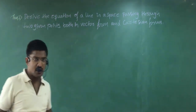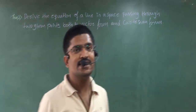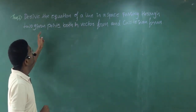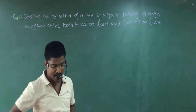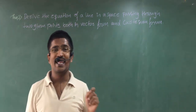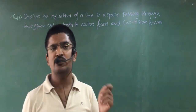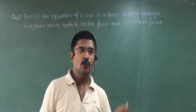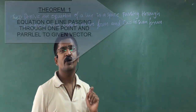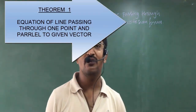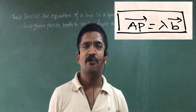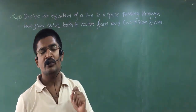For Theorem 2, what we have to derive? They are asking us to derive the equation of a line passing through two given points, both in vector form and Cartesian form. So Theorem 1 was a line passing through one point, and Theorem 2 is a line passing through two points. For Theorem 1, you should remember: vector AP equals lambda times vector B.